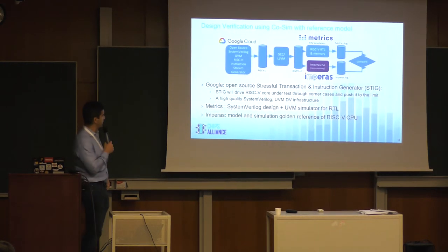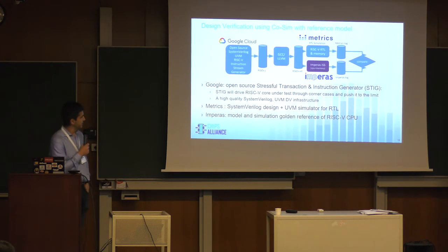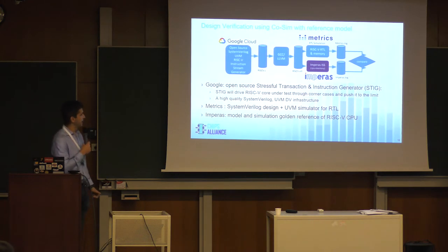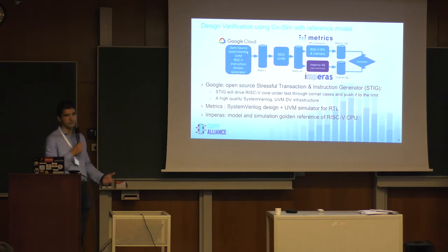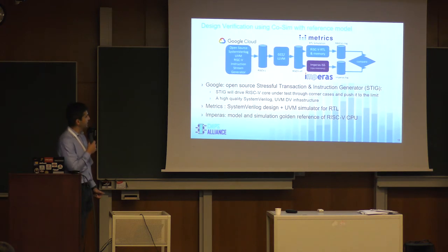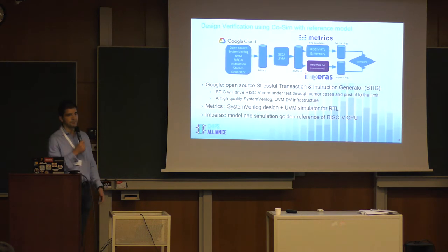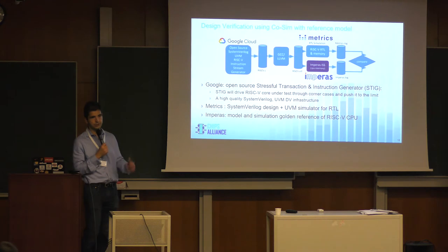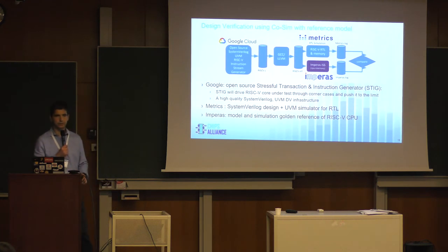For design verification using co-simulation, this is a Google project now running in CHIPS Alliance together with Metrics and Imperas. It's a cloud-hosted flow: a stressful random instruction generator produces RISC-V instructions that run simultaneously through the Imperas golden model and the Metrics cloud-hosted RTL simulator, and the outputs are compared to catch bugs.